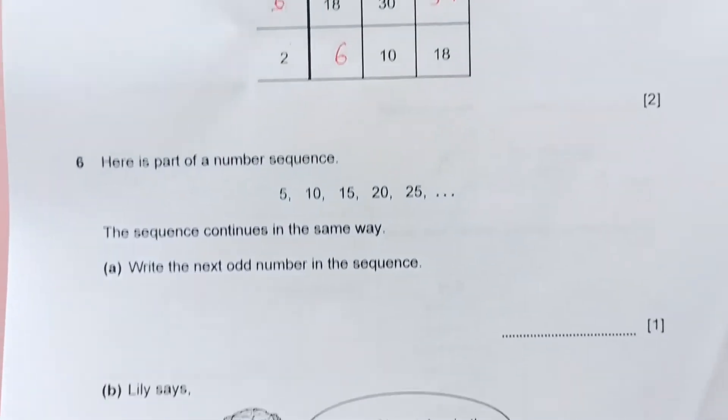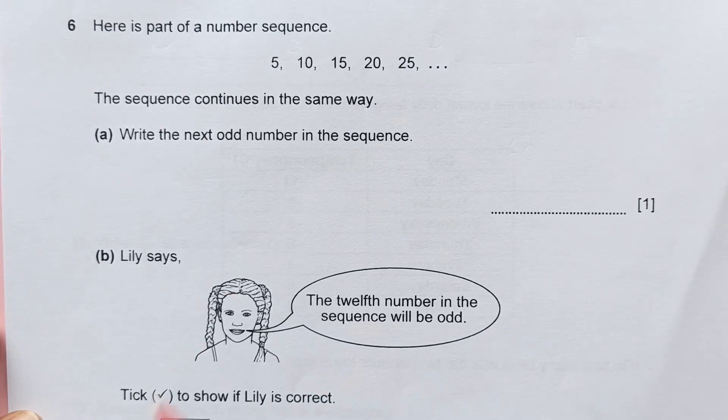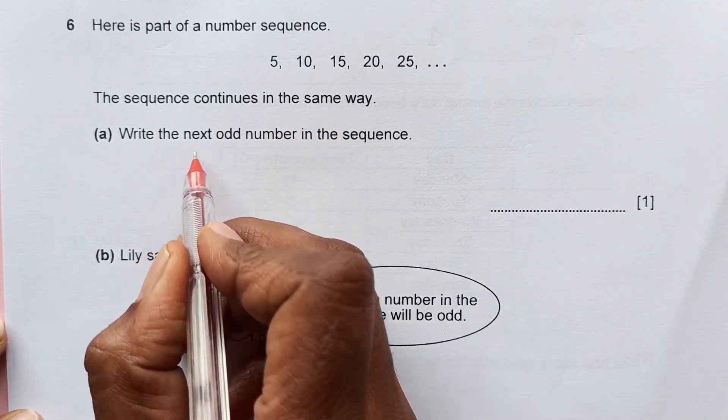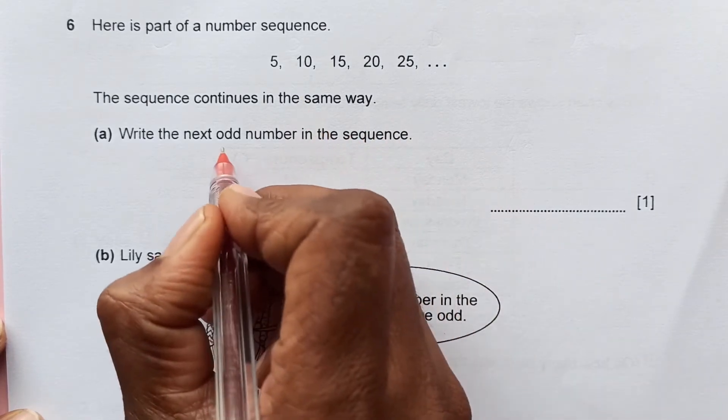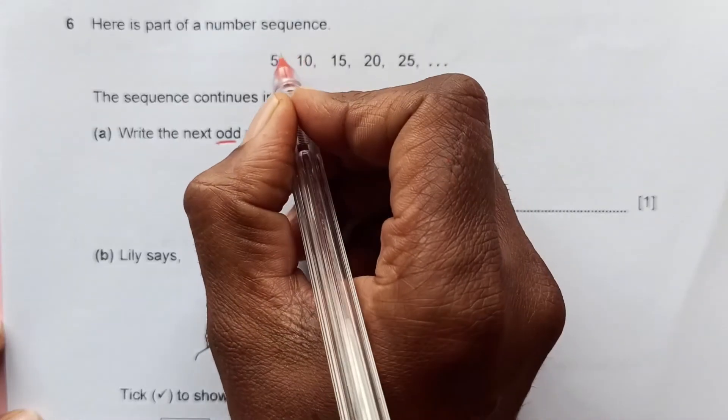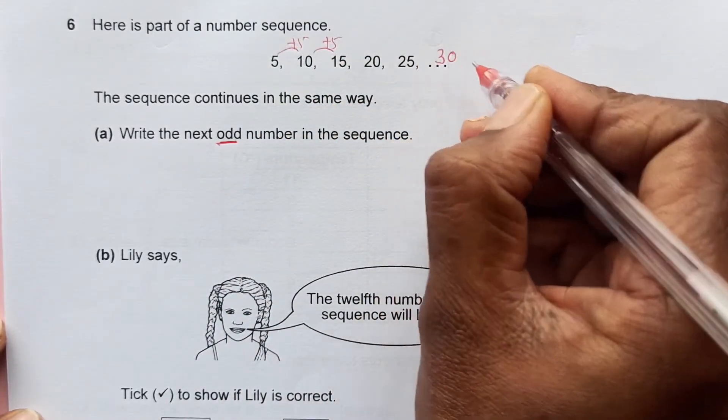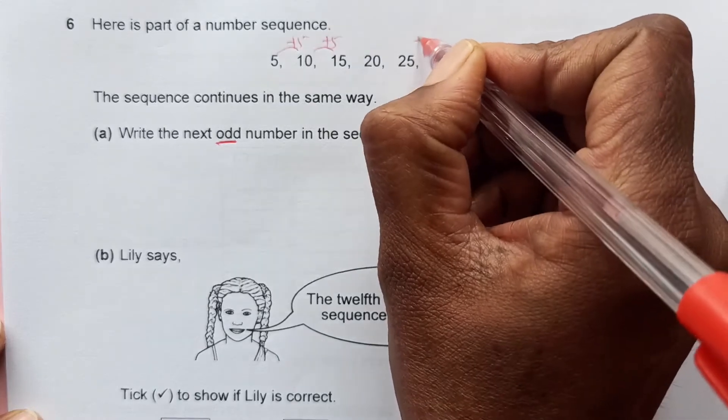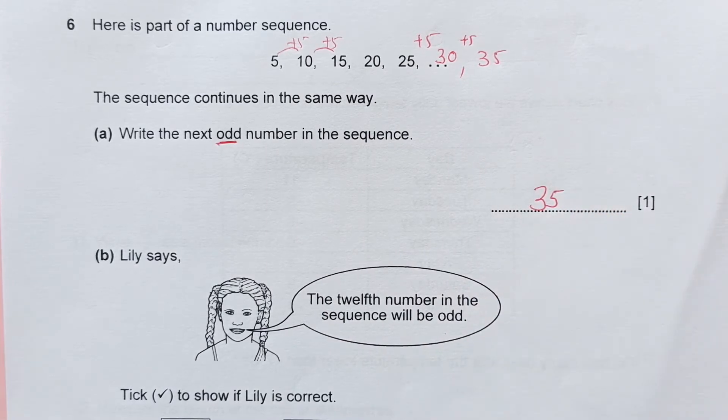Number 6. Here is part of a number sequence: 5, 10, 15, 20, 25. The sequence continues in the same way. Write the next odd number in the sequence. You should always underline the keywords: next odd number. We are getting every term by adding 5. 25 plus 5 is 30, which is not odd, it's even. Next will be by adding 5 again: 35. So the next odd number will be 35.